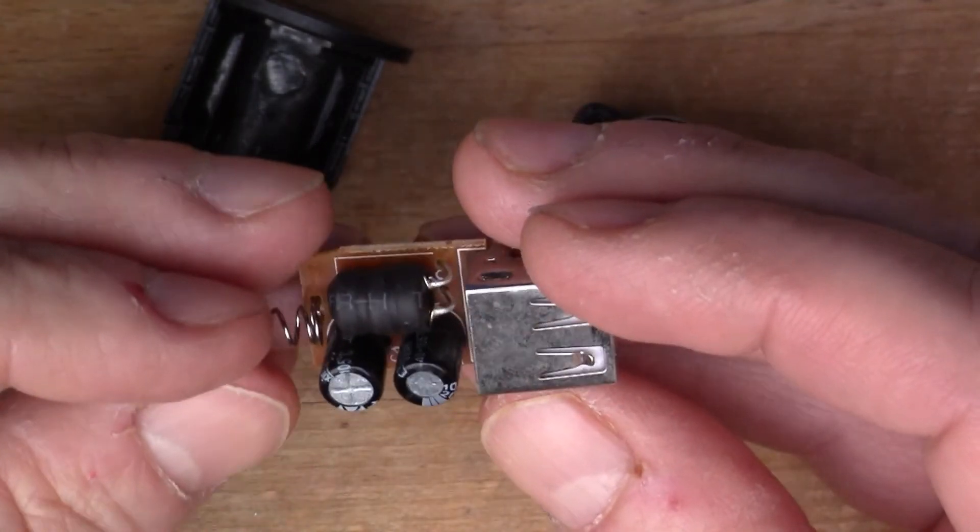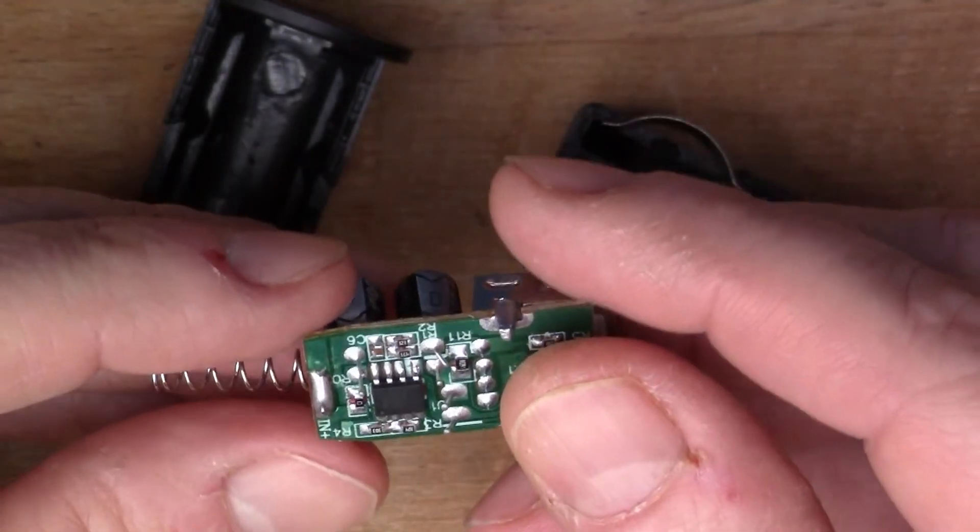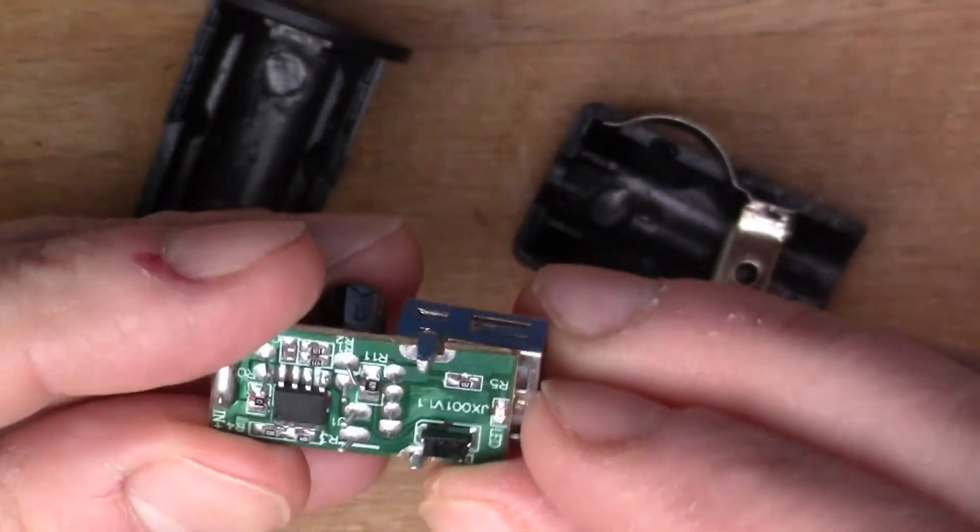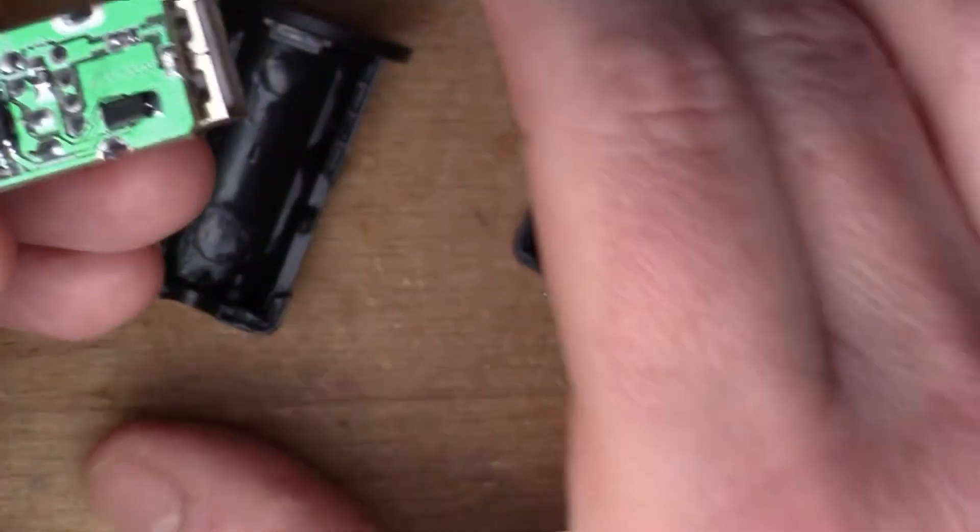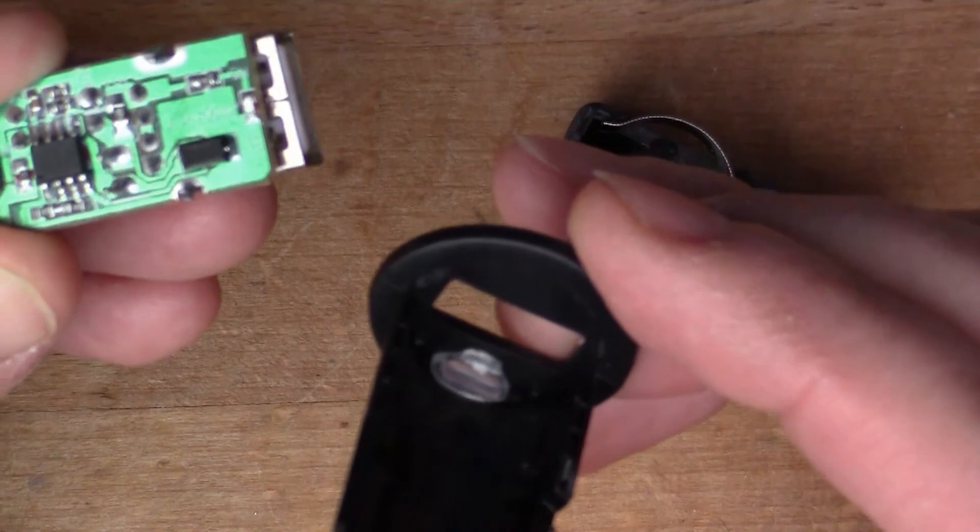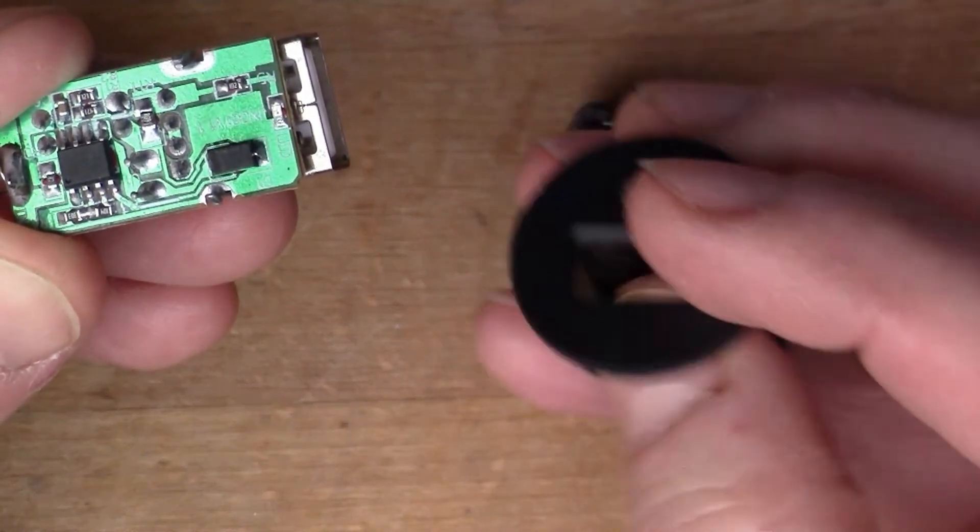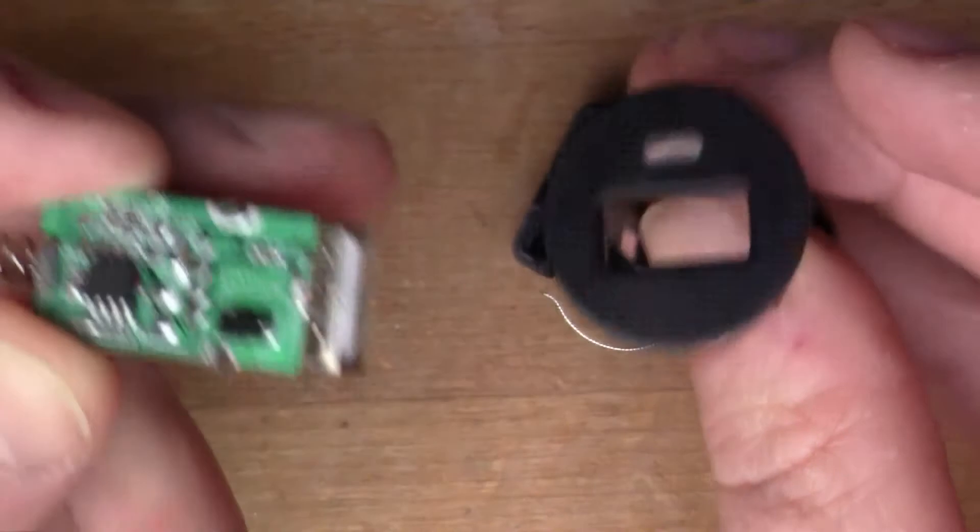I just noticed the surface mount LED. There's an LED here which is obviously shining through a little plastic light pipe here in order to get the light out the front.